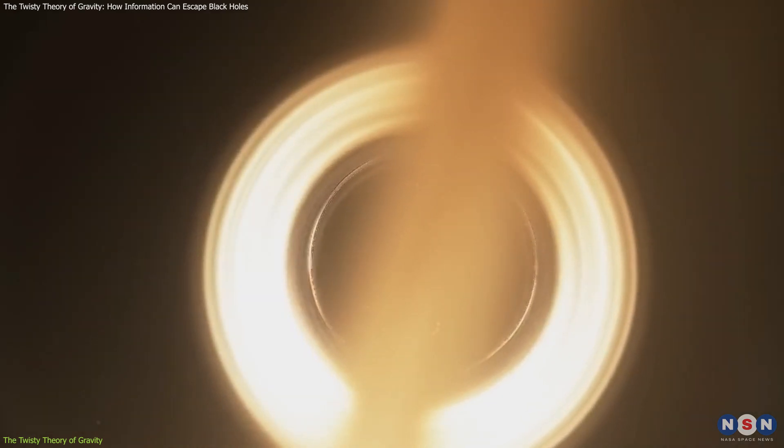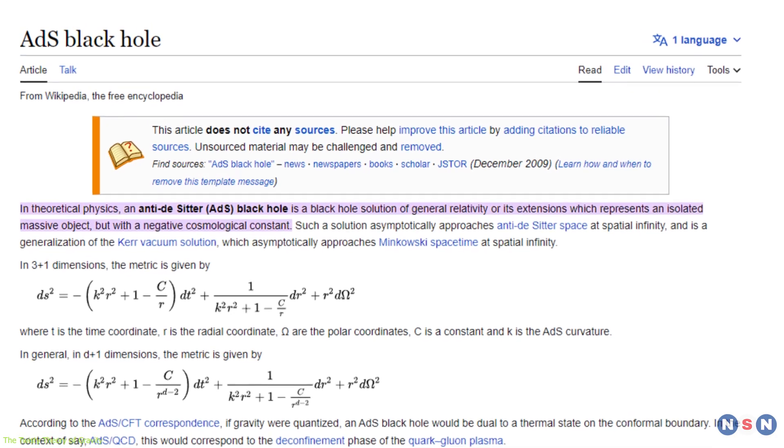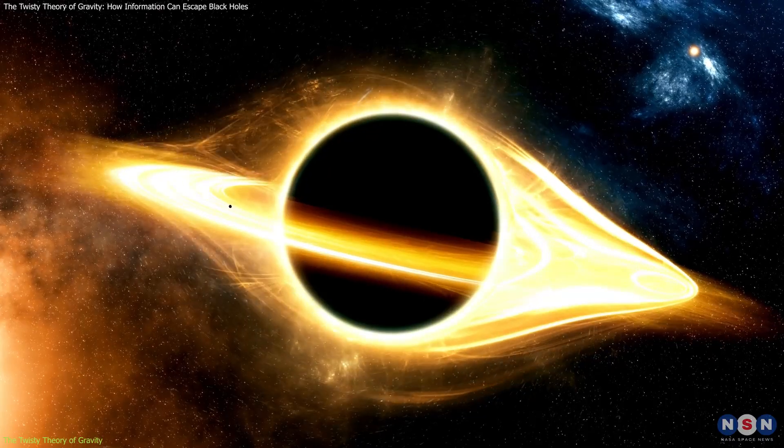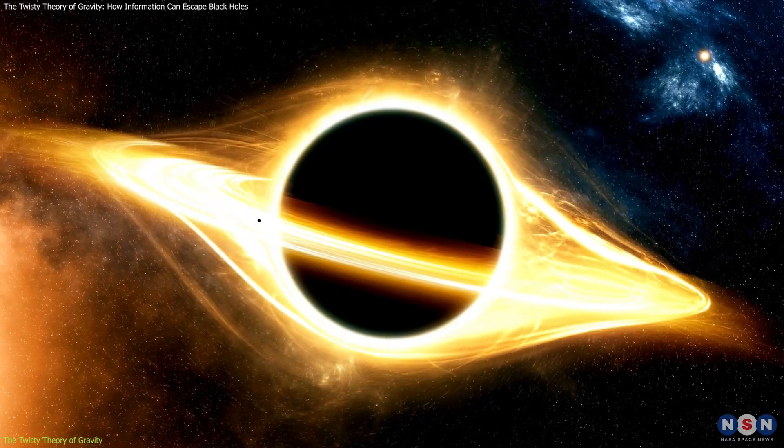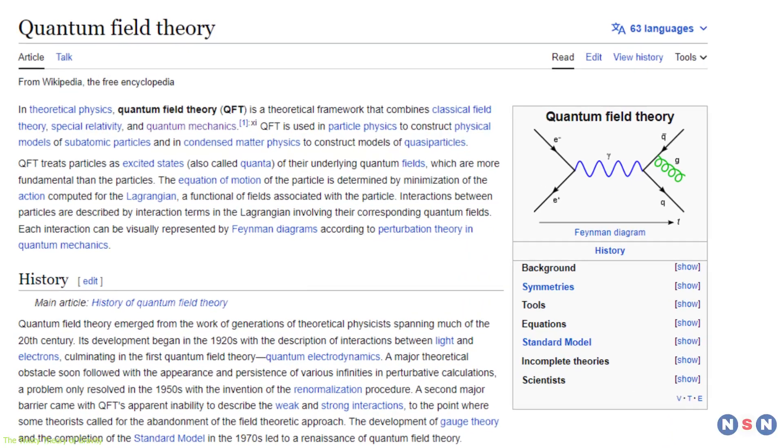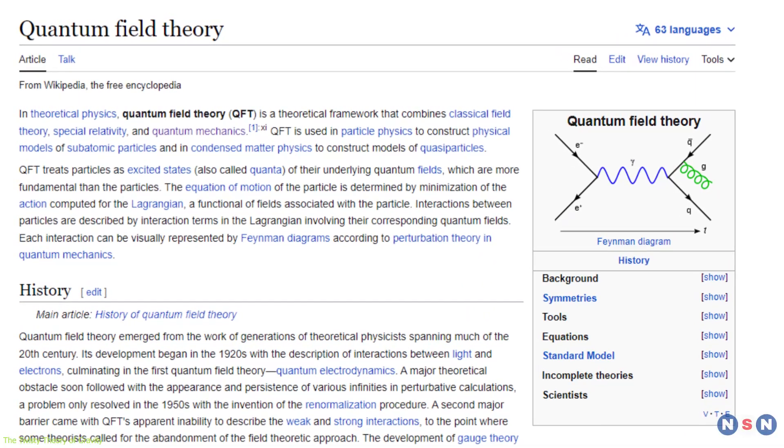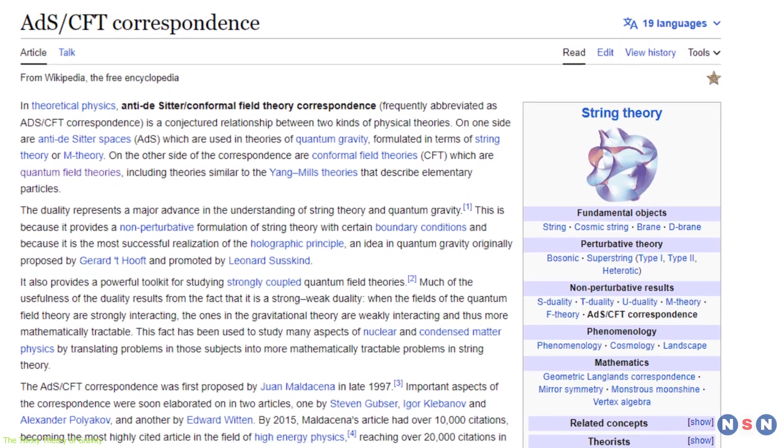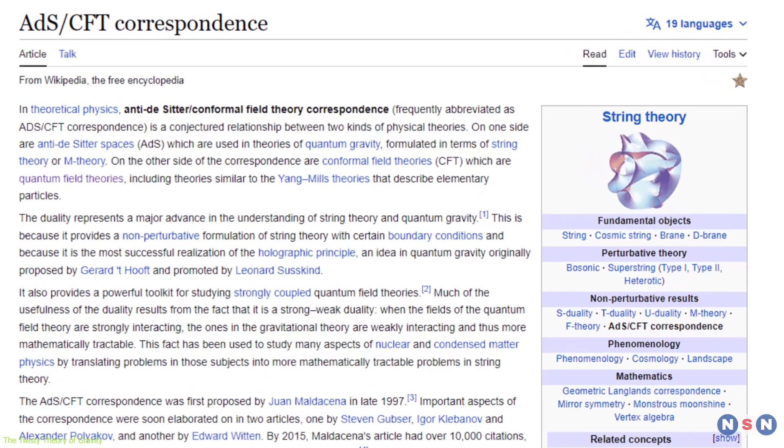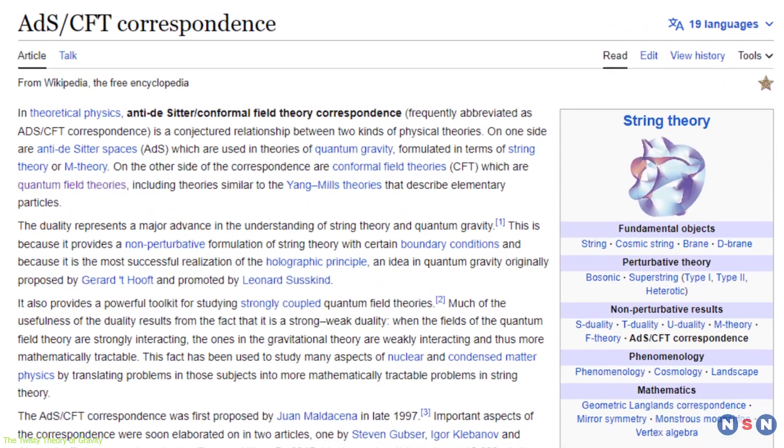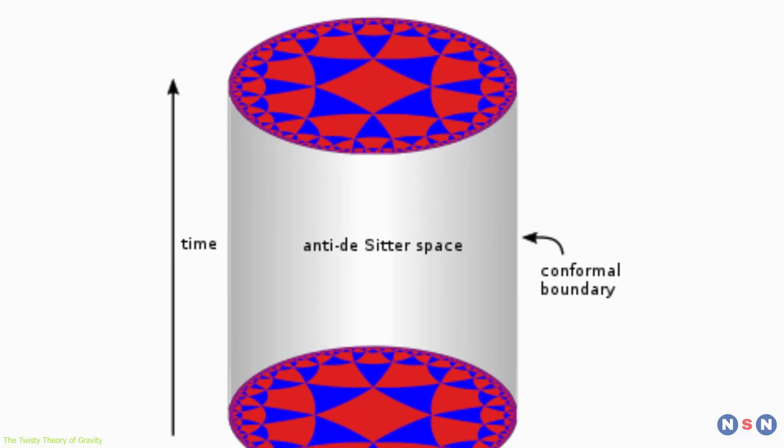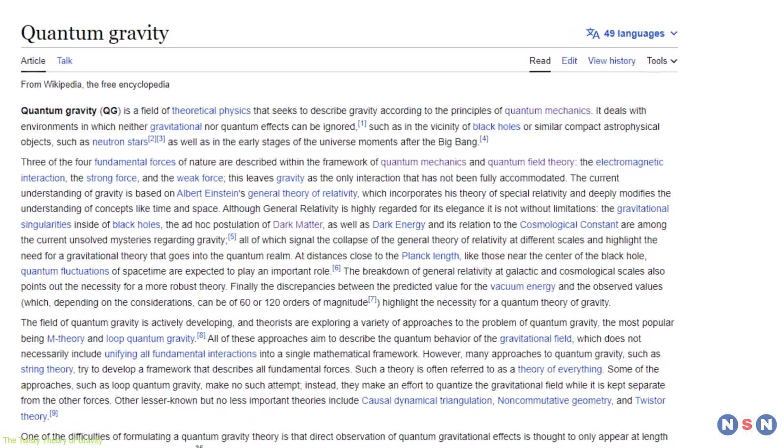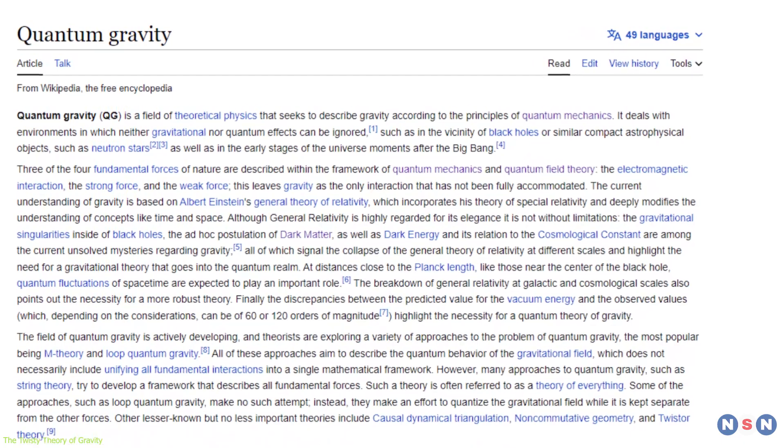The holographic principle has been successfully applied to a special class of black holes called anti-de-sitter black holes, which exist in a negatively curved space. In this case, the information on the boundary is described by quantum field theory, which is a theory that describes the interactions of particles and fields. The remarkable correspondence between anti-de-sitter black holes and quantum field theory is known as the ADS-CFT correspondence, and it has been widely used as a tool to study quantum gravity, which is the elusive theory that unifies general relativity and quantum mechanics.